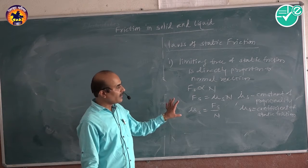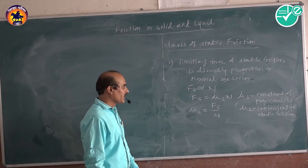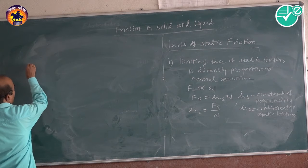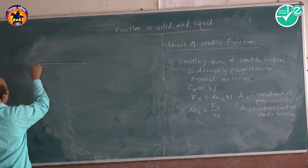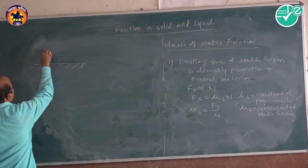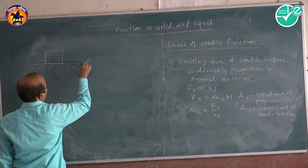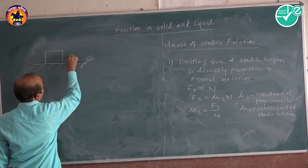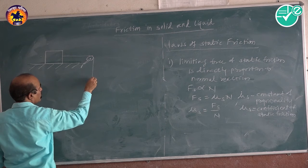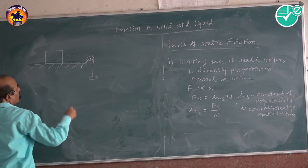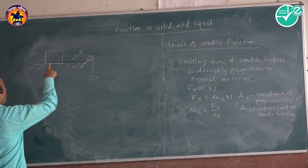We can verify this law by experiment. Here is a table with a box kept on it. A thread connected to this box is running over a pulley, and a pan is attached to it. When you apply force through the pan, an applied force F acts on the block.